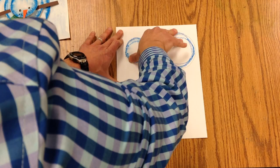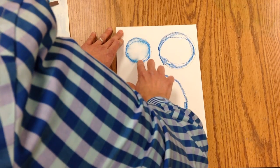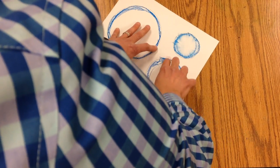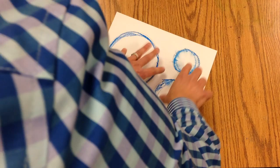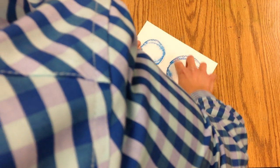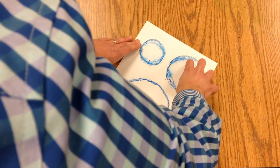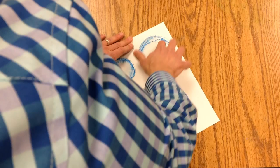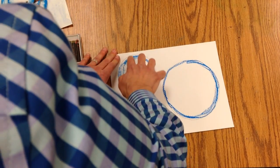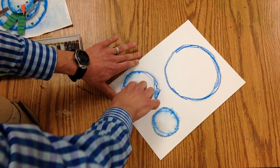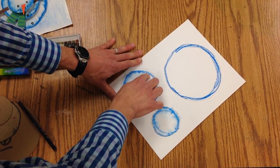You can use your thumb too. You can always turn your paper if it's easier. I always find it's easier to pull towards myself. I always go in towards the center of that circle.